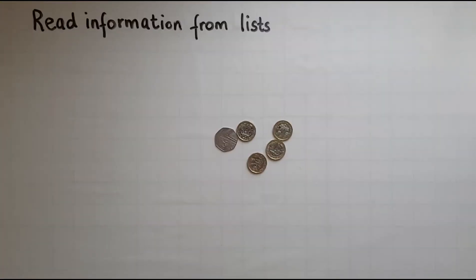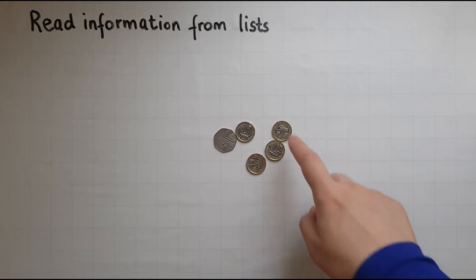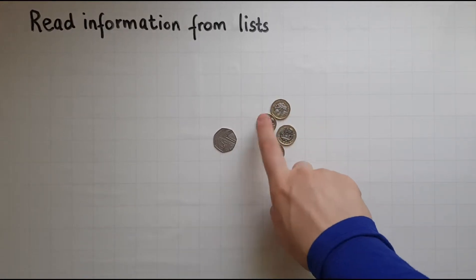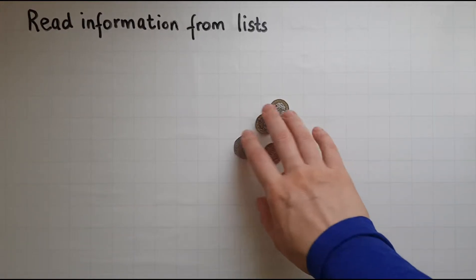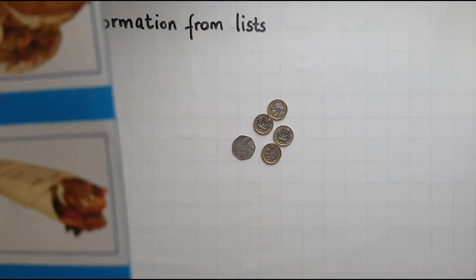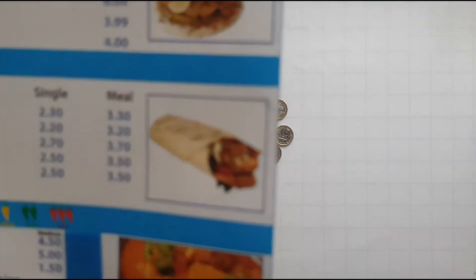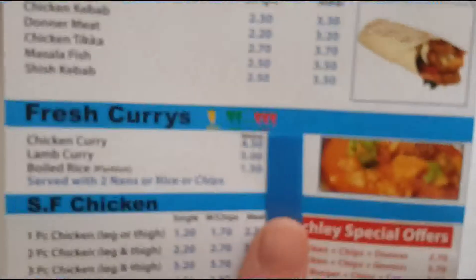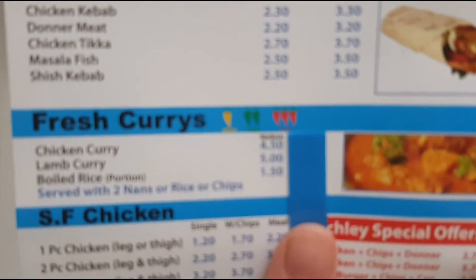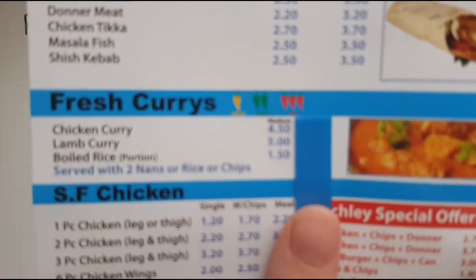I have £1, 2, 3 — £4.50. I want to buy something that I can afford, something I can purchase with that amount of money.